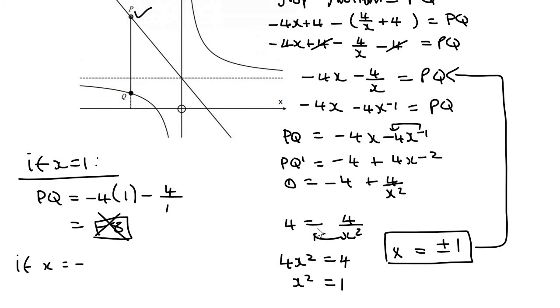And then if x is minus 1, PQ is going to be minus 4 times minus 1, minus 4 over minus 1, and that's going to give us positive 8, and that's applicable. So that is the answer.